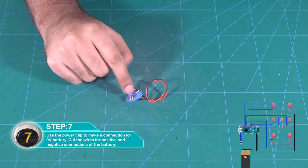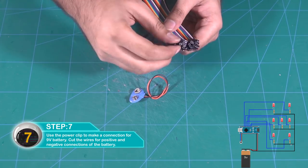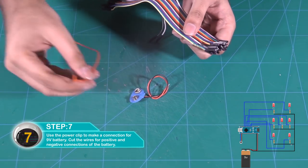Use the power clip to make a connection for the 9V battery. Cut the wires for positive and negative connections of the battery.